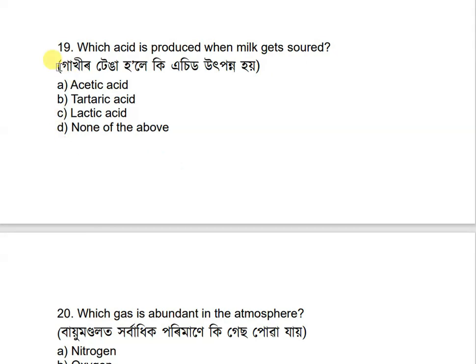Question 19: Which acid is produced when milk gets soured? Options are: acetic acid, tartaric acid, lactic acid, and none of the above. The correct answer is lactic acid — lactic acid is produced when milk gets soured.